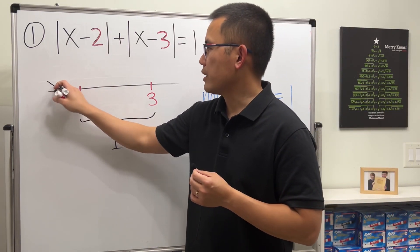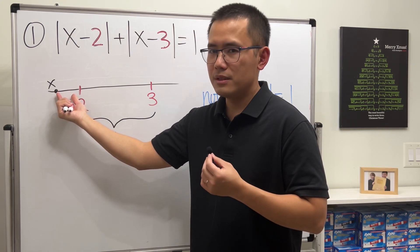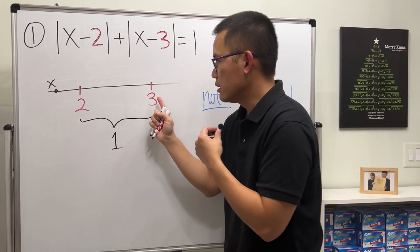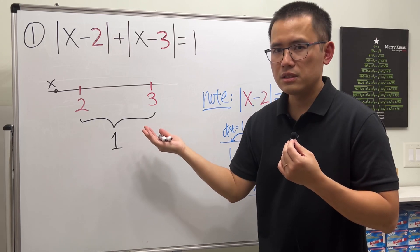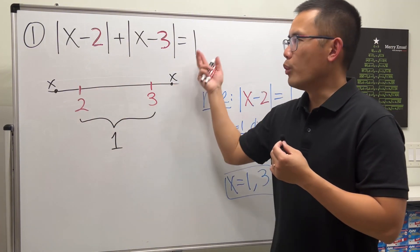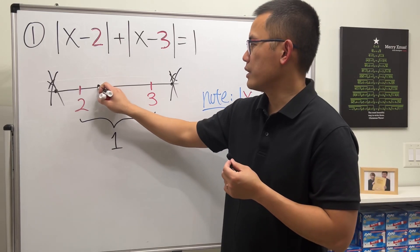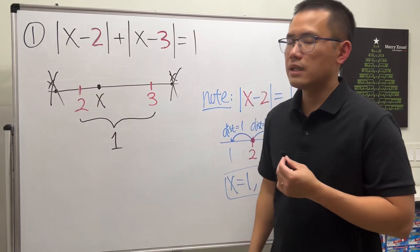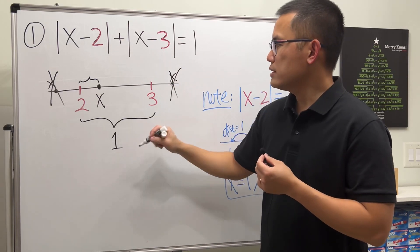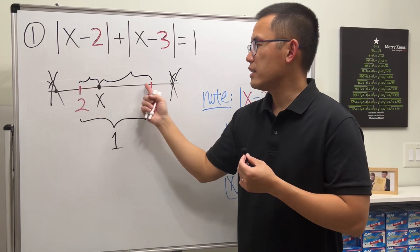So where can x be? Let's think about it. If we put x outside to the left, the distance from x to 3 is already bigger than 1, so adding anything else can never equal 1. Likewise, x cannot be to the right of 3 either, because the distance from x to 2 would already be more than 1. So neither position outside works. If x is somewhere in between 2 and 3, the distance from x to 2 plus the distance from x to 3 — together they add up to exactly 1.